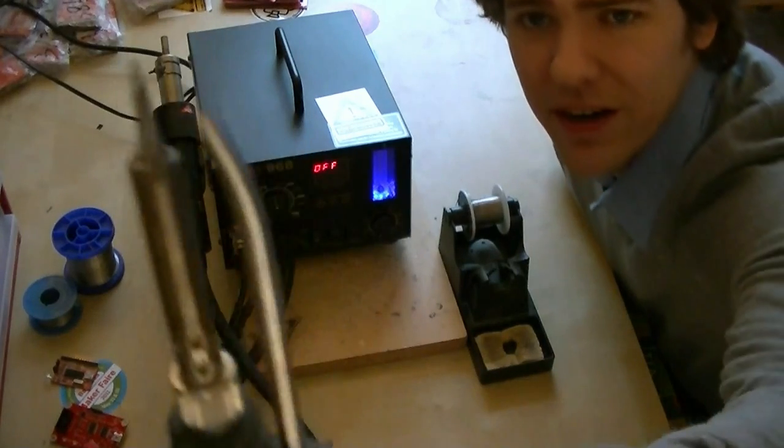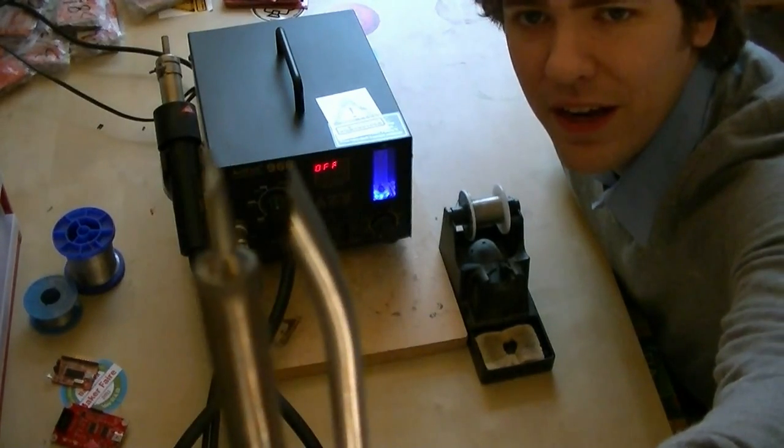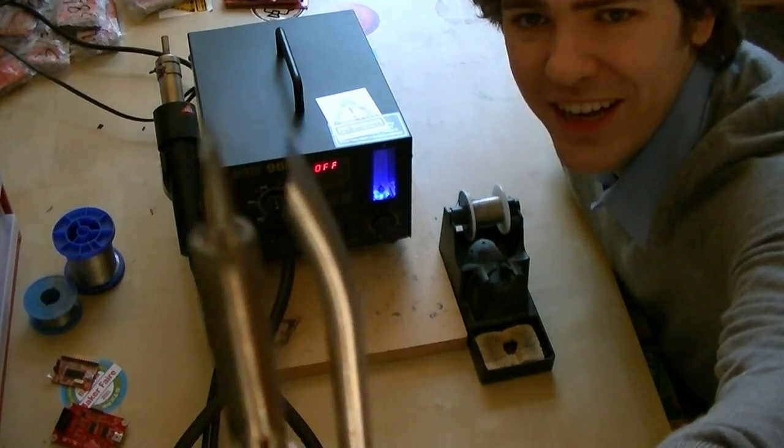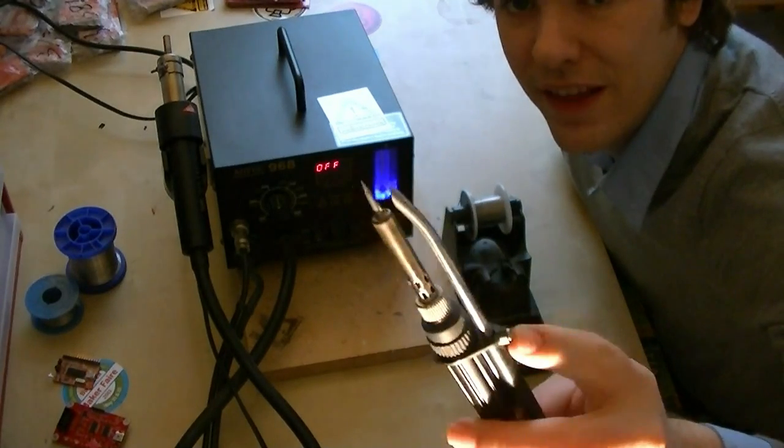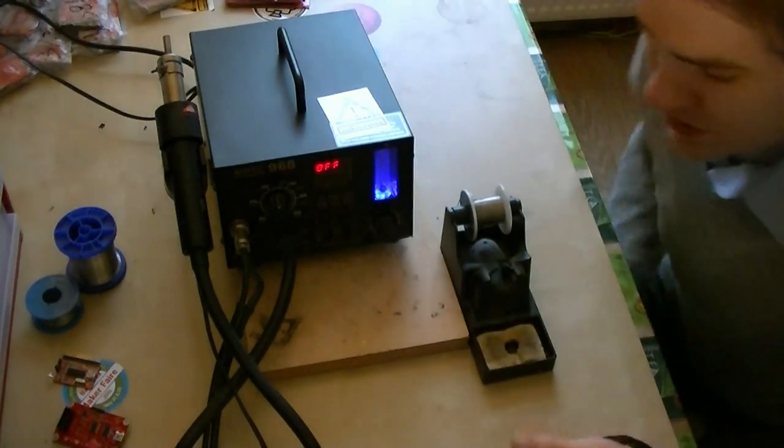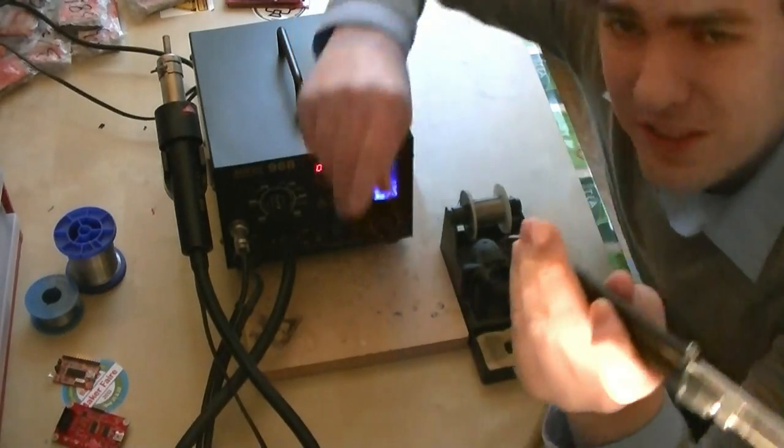The fume extractor part, you can see there, is the metal tube attached to the iron, so that when you solder and you hit flux or rosin or stuff, it sucks up the fumes through the tube attached to the cord.